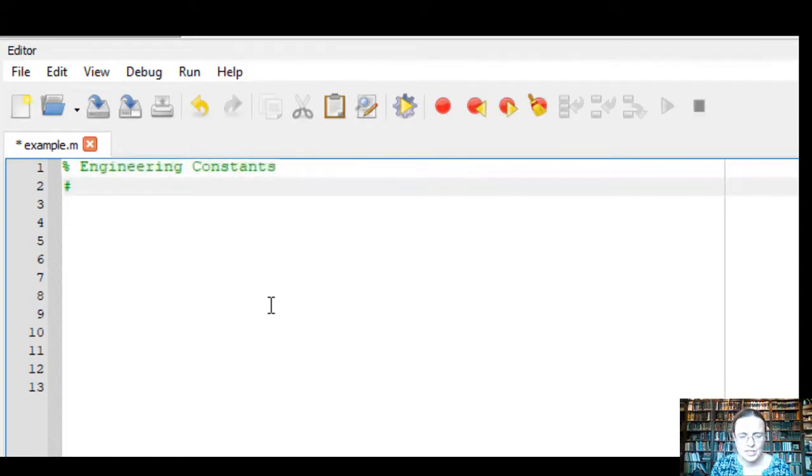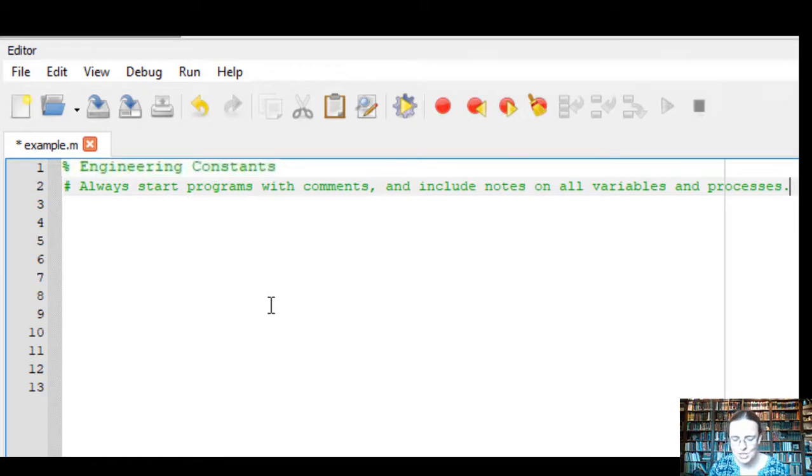Here I'll do another example for a comment line. Always start programs with comments and include notes on all variables and processes. So this is a good practice to always start with maybe a little algorithm or discussion of what you're trying to accomplish.